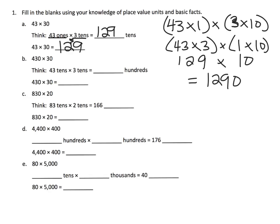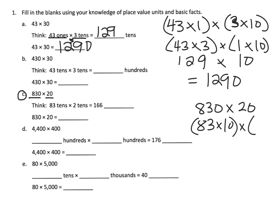Let's skip down to problem c: 830 times 20. That's the same as saying 83 tens times 2 tens. We can use our associative and commutative properties to get that this is equal to 83 times 2 times 10 times 10.